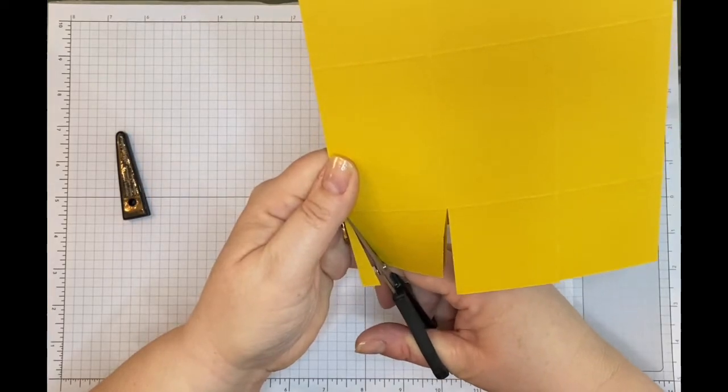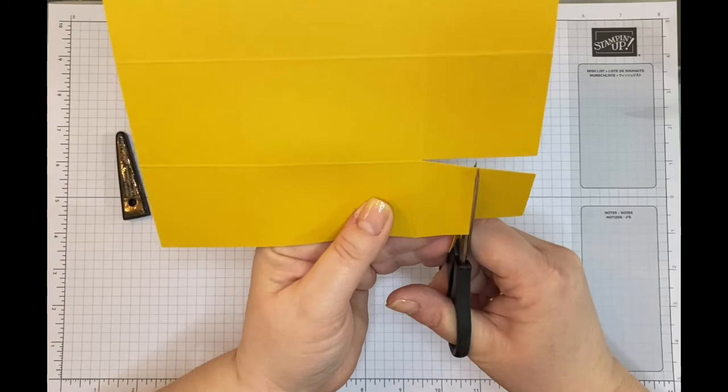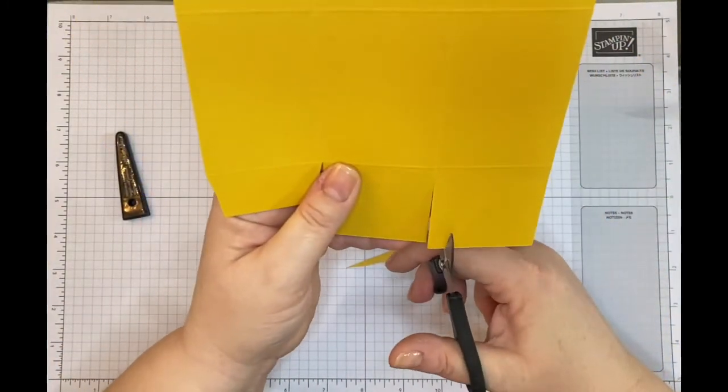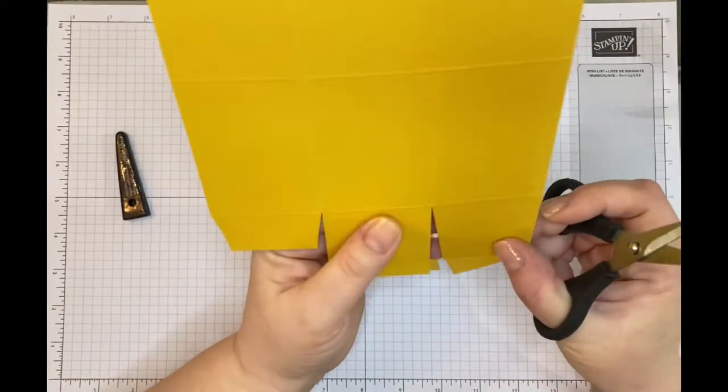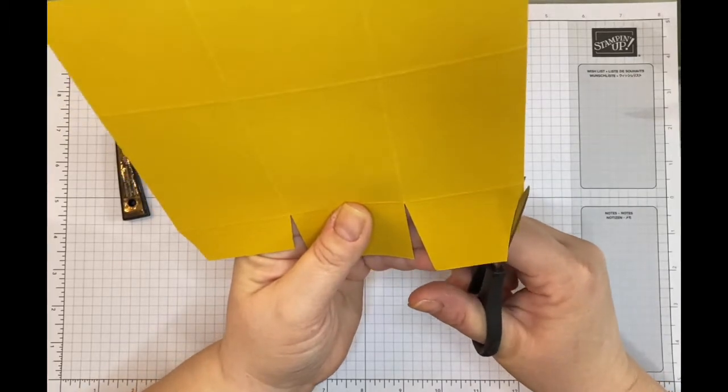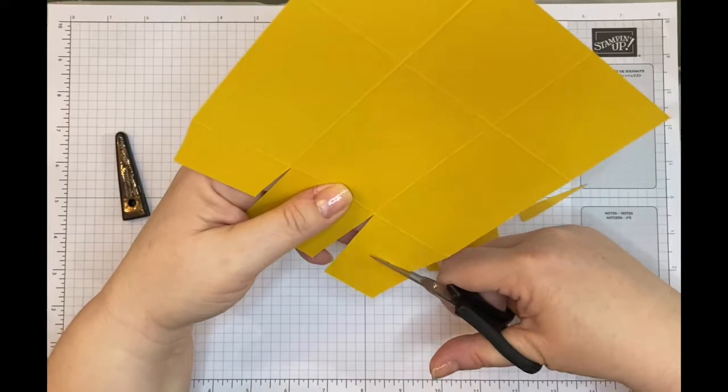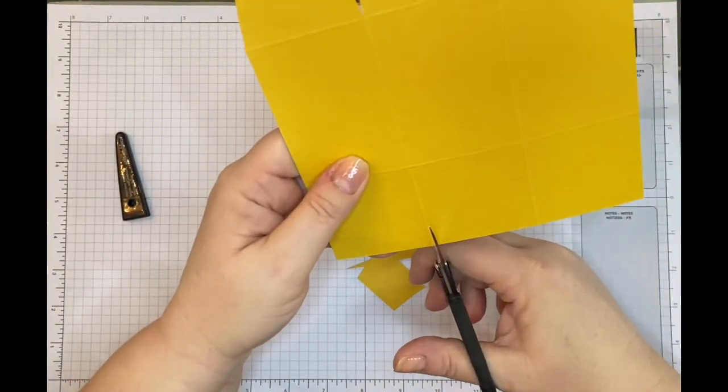I'm going to cut them down because they're very long because of the depth of the box. I'll cut them down to about here, and I'll do the same on this side. I'm going to do that both sides, and that means when I come to glue them, they will be able to fit. I'll do exactly the same on this side.